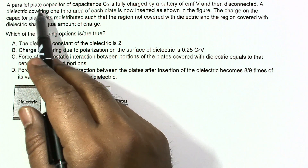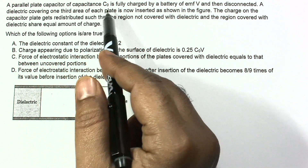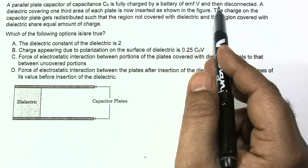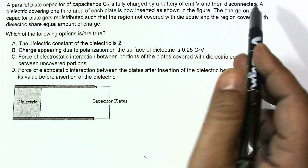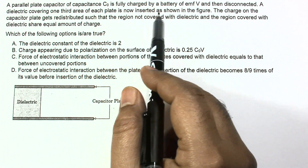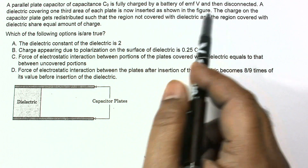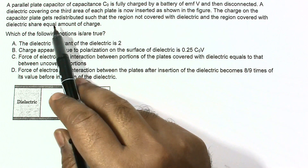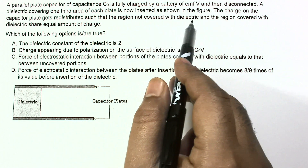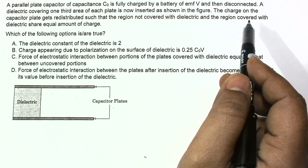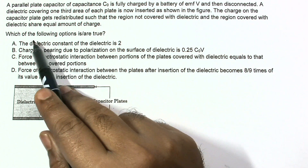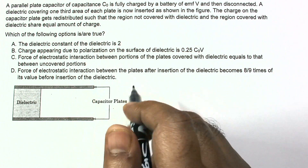In this question, a parallel plate capacitor of capacitance C₀ is fully charged by a battery of EMF V and then disconnected. A dielectric covering one-third area of each plate is now inserted as shown in the figure. The charge on the capacitor plate gets redistributed such that the region not covered with dielectric and the region covered with the dielectric share equal amounts of charge. Which of the following options are true?